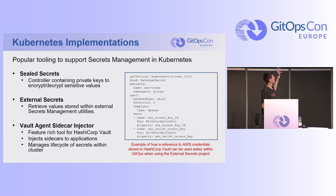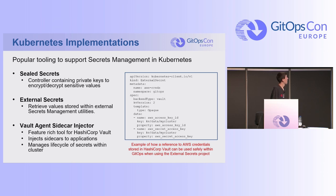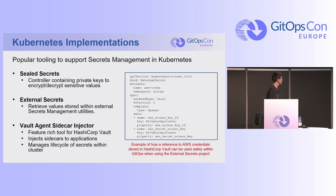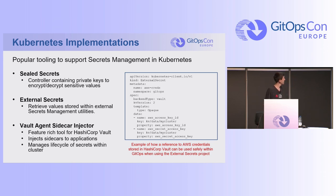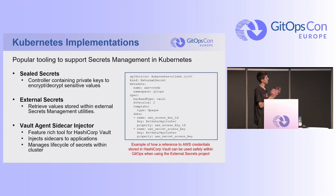All three are great ones to implement. On the right is an example of how you reference an external secret using HashiCorp Vault referencing credentials to talk to AWS — it's basically saying the backend type is Vault, referencing the AWS key ID and secret key inside Vault, and putting that into a secret in your Kubernetes cluster.